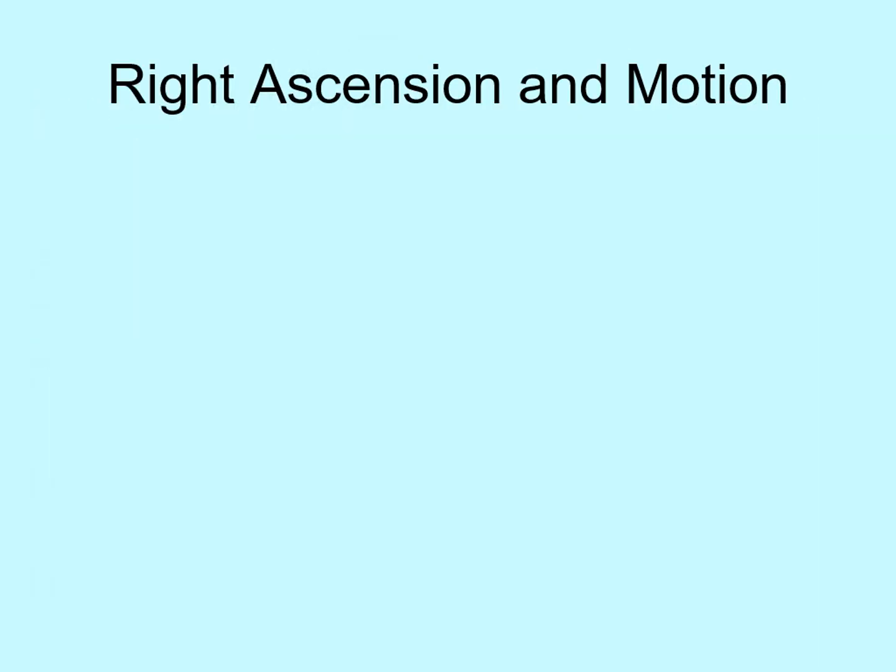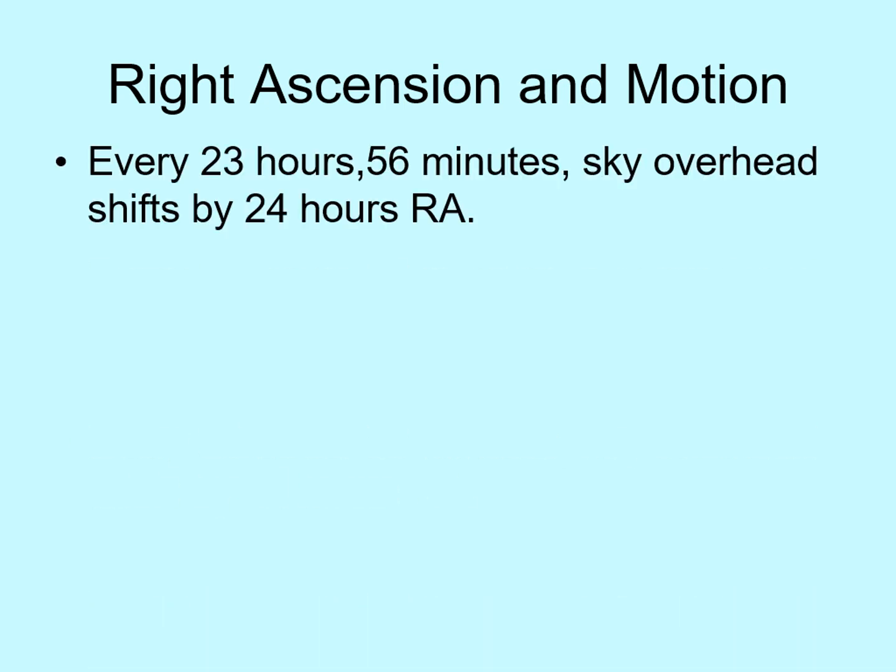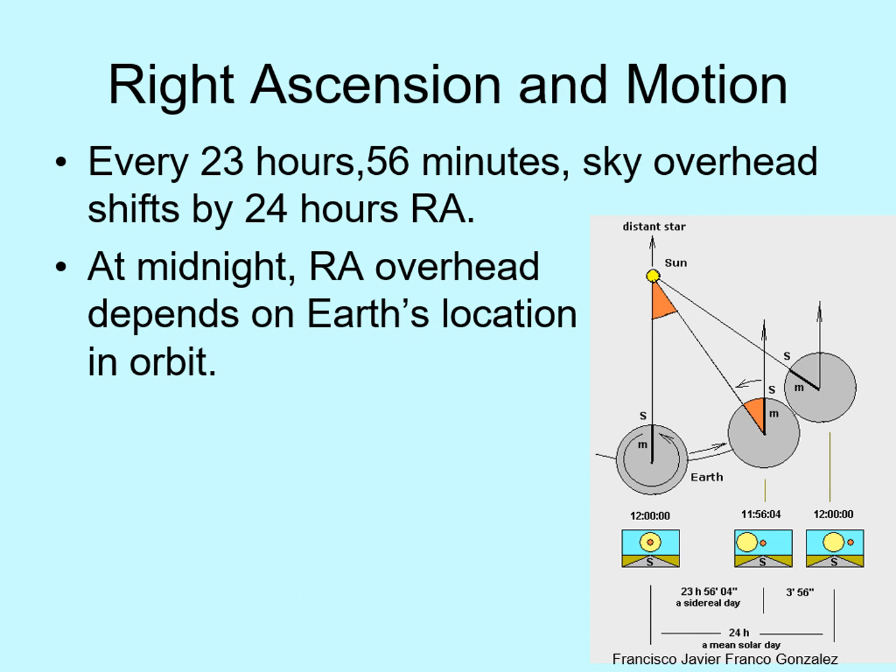Earlier, we said that as the Earth spins each day, a point overhead goes through all 24 hours of right ascension. This isn't quite accurate. In fact, it only takes 23 hours and 56 minutes for our sky to go through 24 hours of RA. The reason for the difference is that the Earth is moving around the Sun. So in 24 hours, the Sun is at a slightly different angle compared to where it was a day earlier. Since we define our clocks by the Sun, the Earth has to spin slightly more than one full circle in 24 hours. This means that each night, the right ascension of the point that is overhead at midnight changes slightly. While you might not notice the change in just 24 hours, over the course of the year the view changes dramatically, shifting the full 24 hours of right ascension in that time.